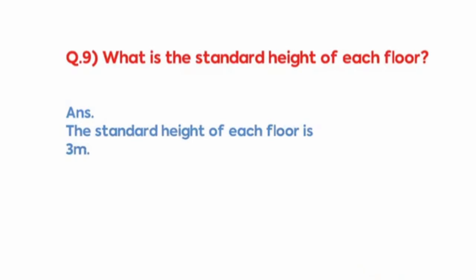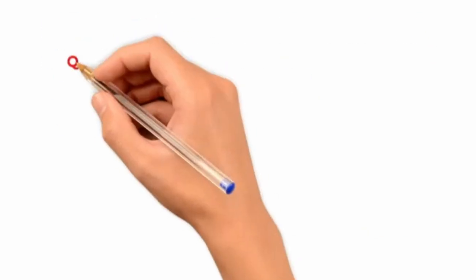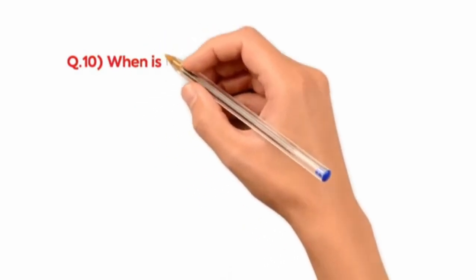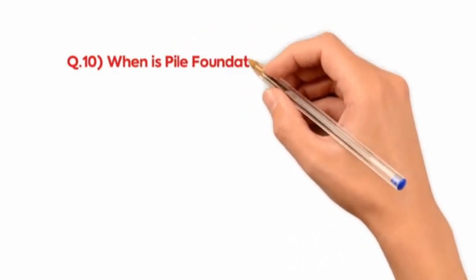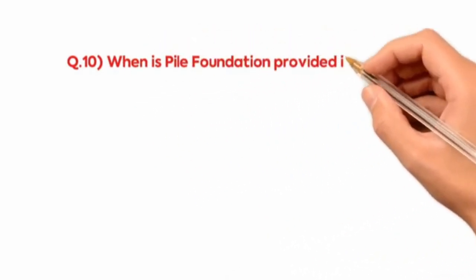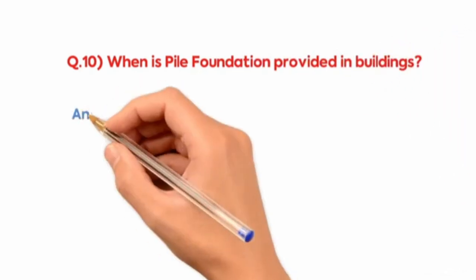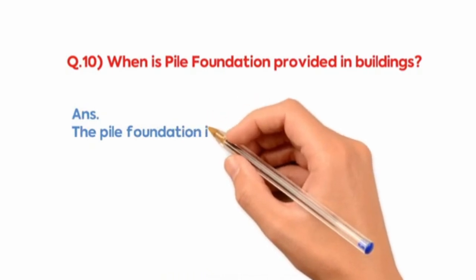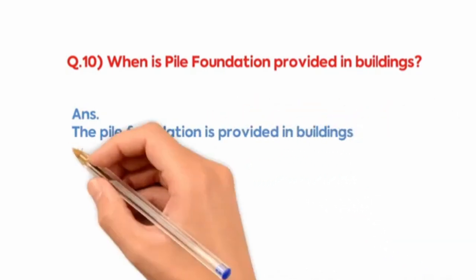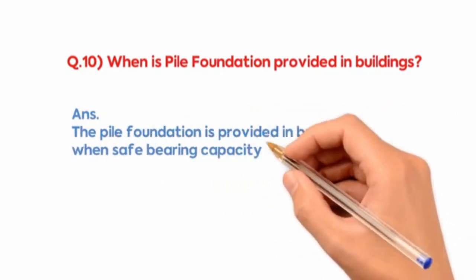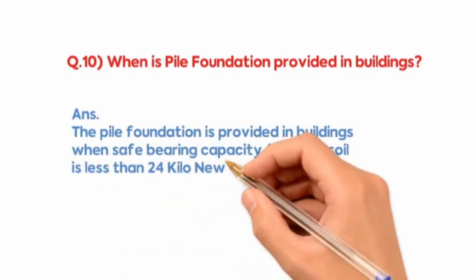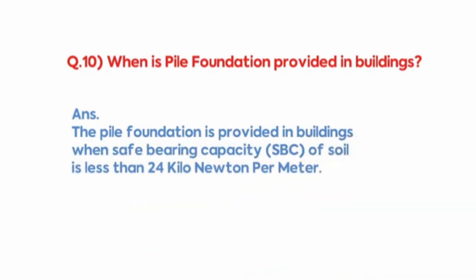When is pile foundation provided in buildings? The pile foundation is provided in buildings when safe bearing capacity of soil is less than 24 kN per meter square.